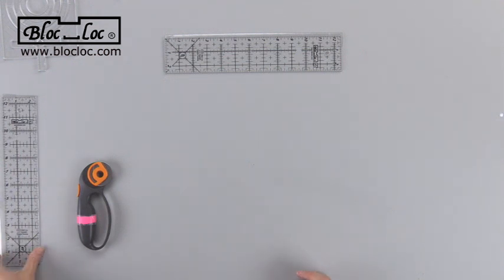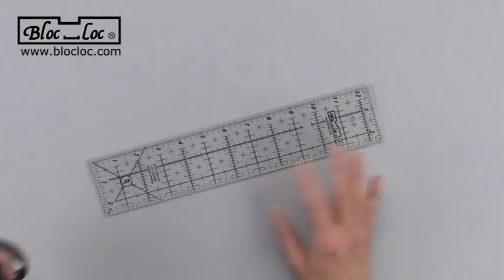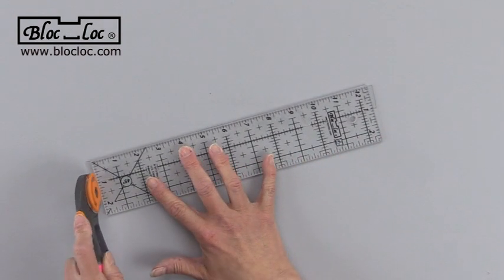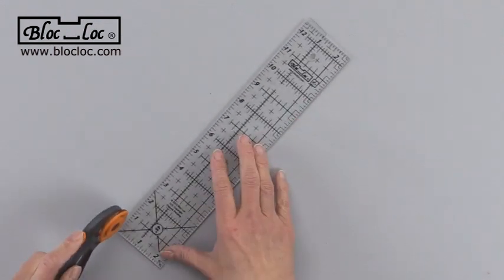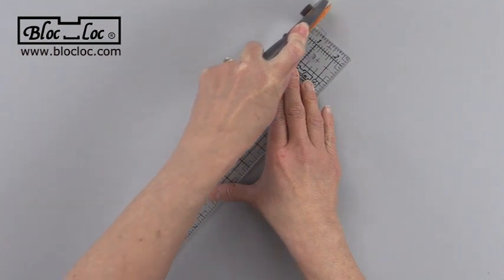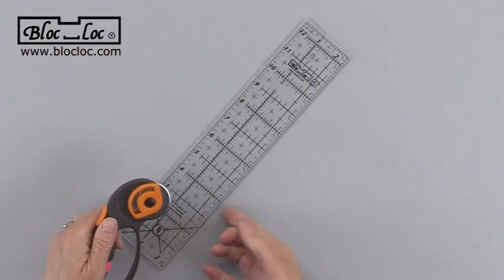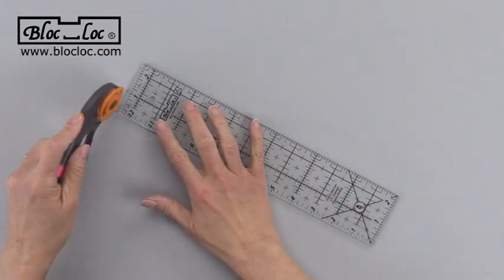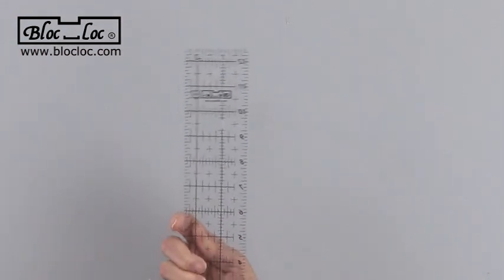I have another one here that I've already done. Then you also use this dull blade in your rotary cutter and you'll trim away the excess. And it'll stick. Get rid of that. And then there you go. So now it's ready to use.